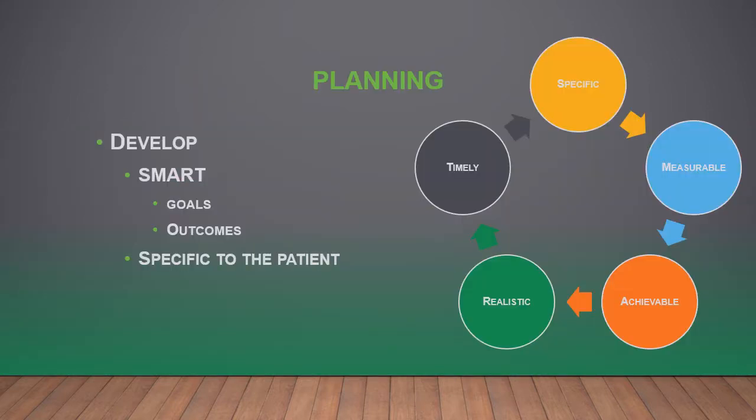Planning: when you create your care plan, you want to develop what we call SMART goals and outcomes. This means they're very specific, so somebody could pick them up who doesn't know the patient and understand what you mean. They're measurable, which means they're not arbitrary — you can't say 'the patient will feel better.' You have to say something like 'the patient will report a pain scale of three or less on a scale of one to ten.'